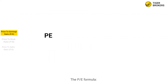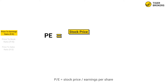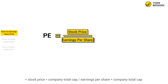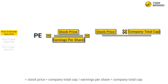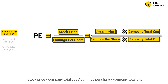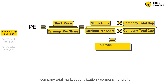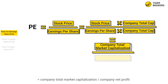The PE formula: PE equals total price divided by earnings per share, which equals stock price multiplied by company total shares divided by earnings per share multiplied by company total shares, which simplifies to company total market capitalization divided by company net profit.